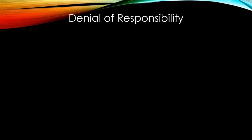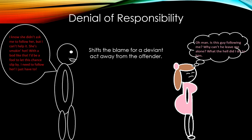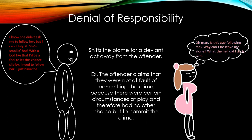Denial of responsibility shifts the blame for a deviant act away from the offender. In the example, a man follows a woman, thinking: 'This guy is following me — why can't he leave me alone? I know she didn't ask me to follow her, but I can't help it. She's smoking hot. I'd be a fool to let this chance slip by.' The offender claims they were not at fault because certain circumstances left them no other choice but to commit the crime.